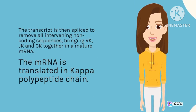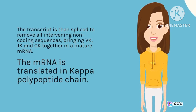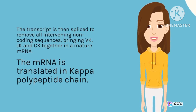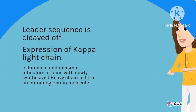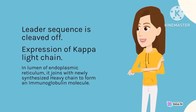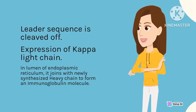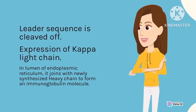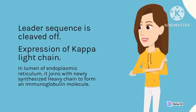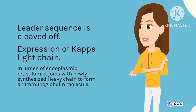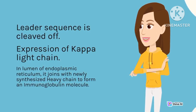The mRNA is translated into the kappa polypeptide chain. The leader sequence is cleaved off, resulting in expression of the kappa light chain. In the lumen of the endoplasmic reticulum, it joins with a newly synthesized heavy chain to form an immunoglobulin molecule.